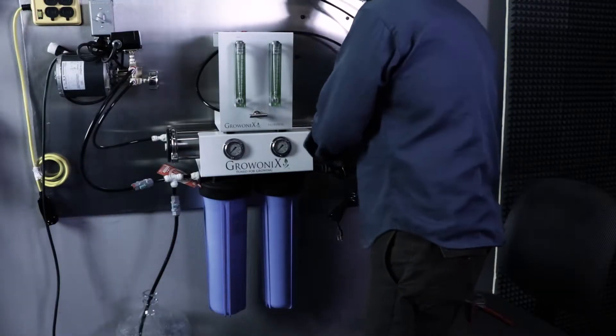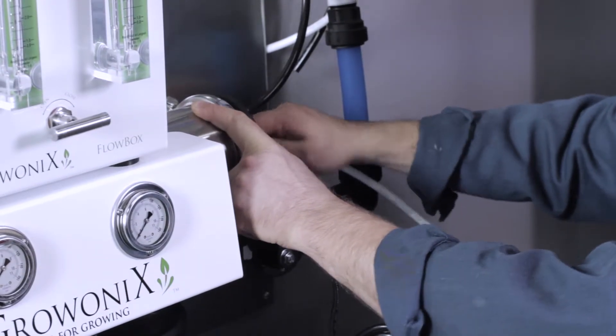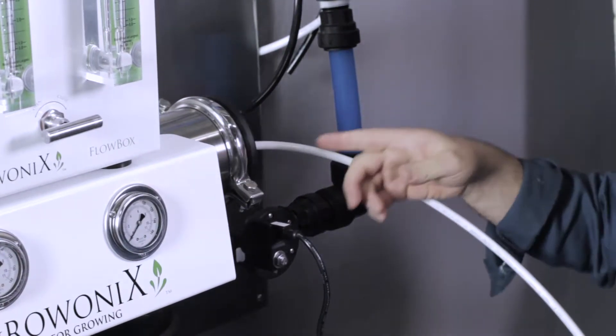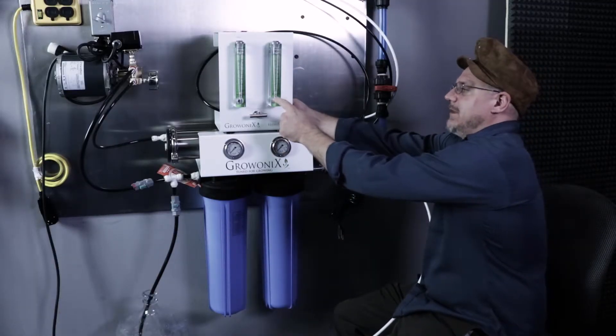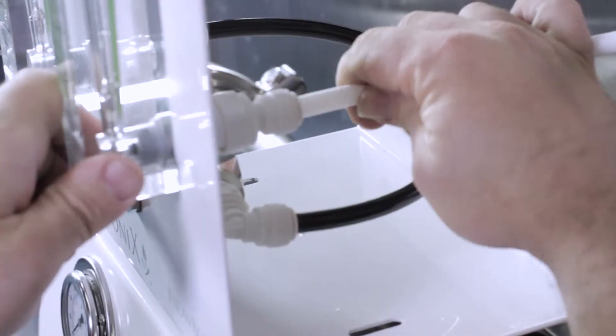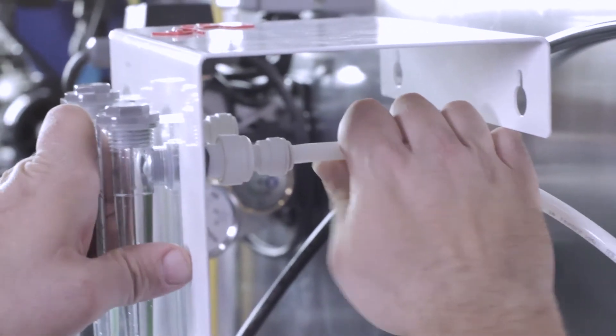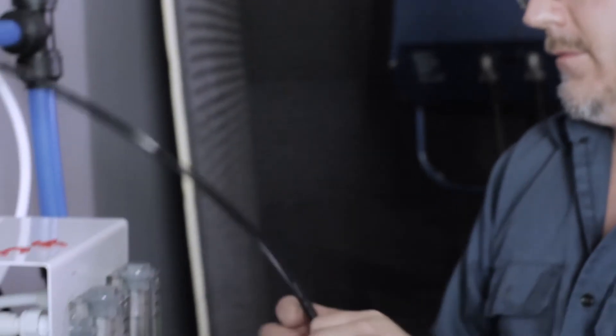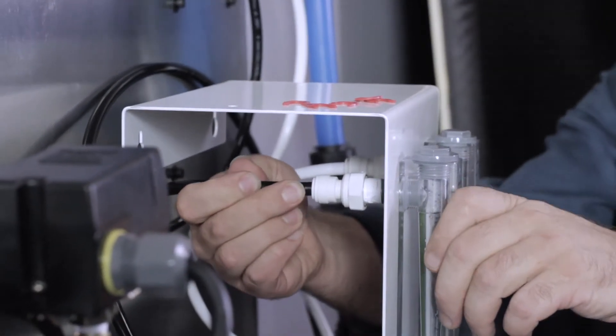Then I'm going to take the RO line, insert it into the white fitting here, make sure it seats past the o-rings, and I'm going to bring it up and plumb it into the bottom of this flow meter directly behind it right here. Here's my RO output line that's going to go to my tank or reservoir. I'm going to plug it in to the top of the flow meter. We're going to take our drain output line, and we are going to plug it into the top of the drain flow meter right in back.